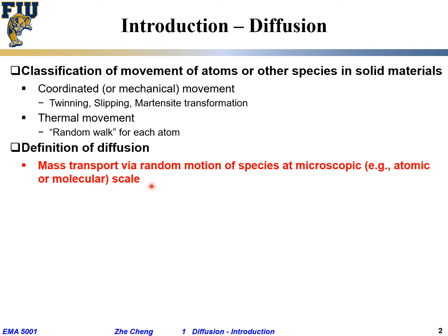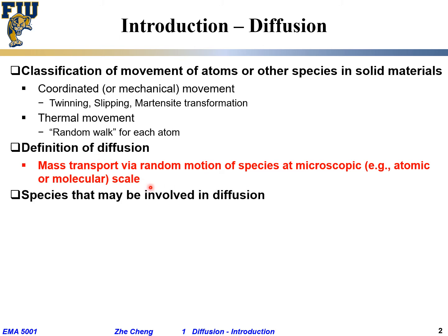So this is the brief definition of diffusion. We'll talk in more depth about this phenomenon in the following lectures. The key point is that diffusion is about mass transport — movement of material — occurring at a very small scale, where atomic or molecular species move in a random fashion, not coordinated and not following the same direction.